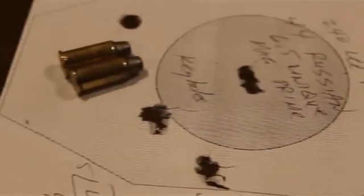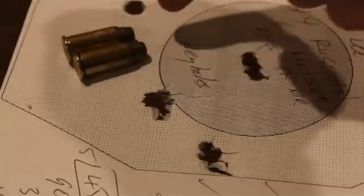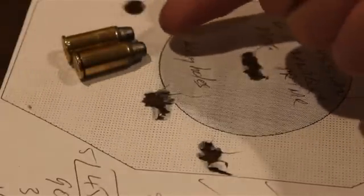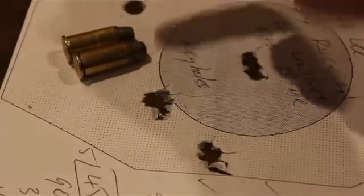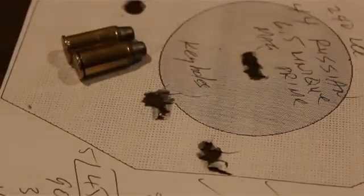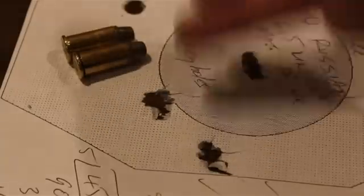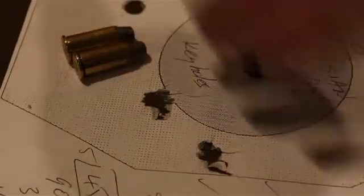Let's look at what the 44 Russian did. With the 6.5 grains of Unique and the Magnum primer, the group was the exact opposite of what happened before. We got key holes - look at those key holes, there's three out of five or key holes and it shot a very bad group.